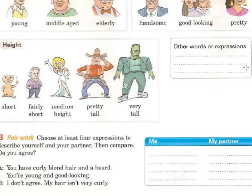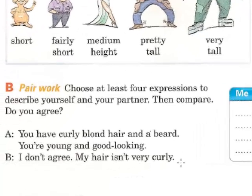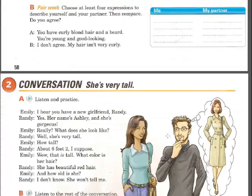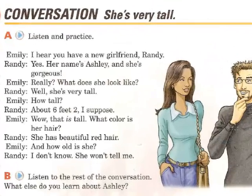Find more on Google or in a dictionary. Choose at least four expressions to describe yourself and your partner, then compare. Do you agree? For example: 'You have curly blonde hair and a beard. You're young and good-looking.' 'I don't agree — my hair isn't very curly.' Now let's listen to this conversation. She is very tall.